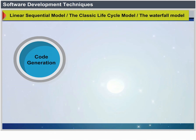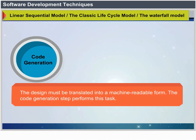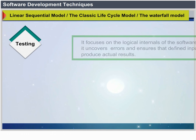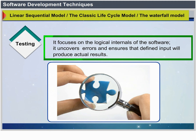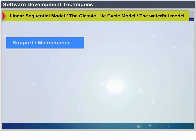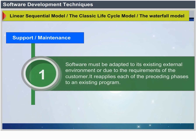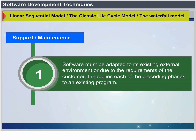Code Generation: the design must be translated into a machine-readable form; the code generation step performs this task. Testing focuses on the logical internals of the software and uncovers errors, ensuring that defined input will produce actual results. Support and Maintenance: software must be adapted to its external environment or customer-required enhancements, reapplying each of the preceding phases to an existing program.